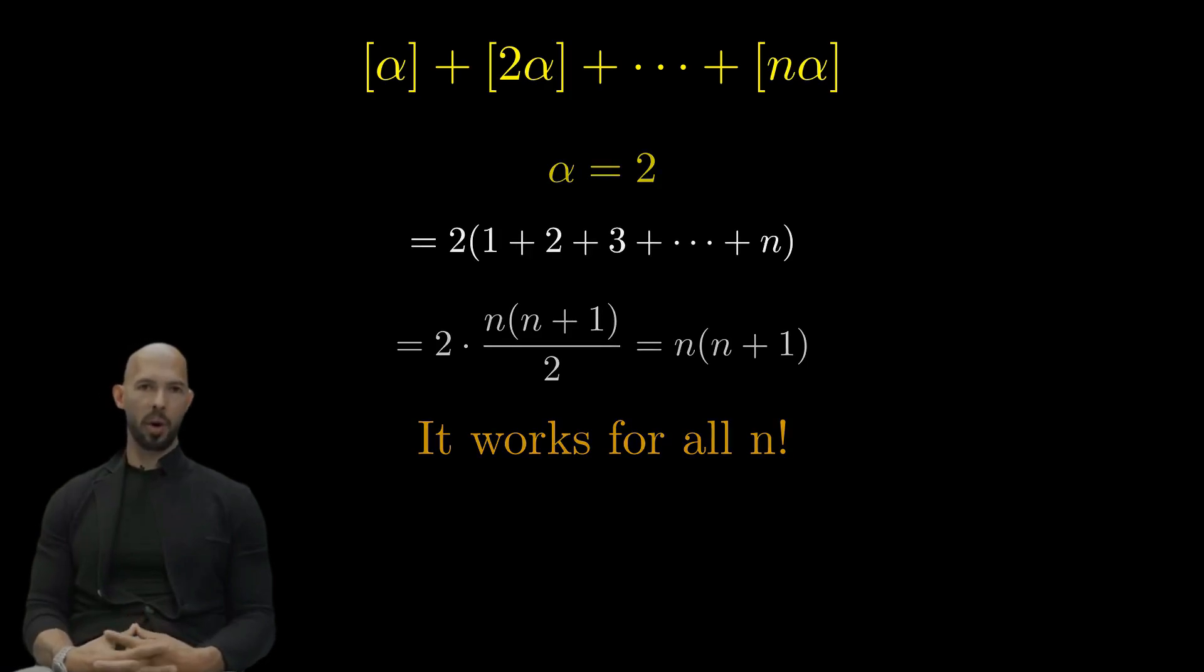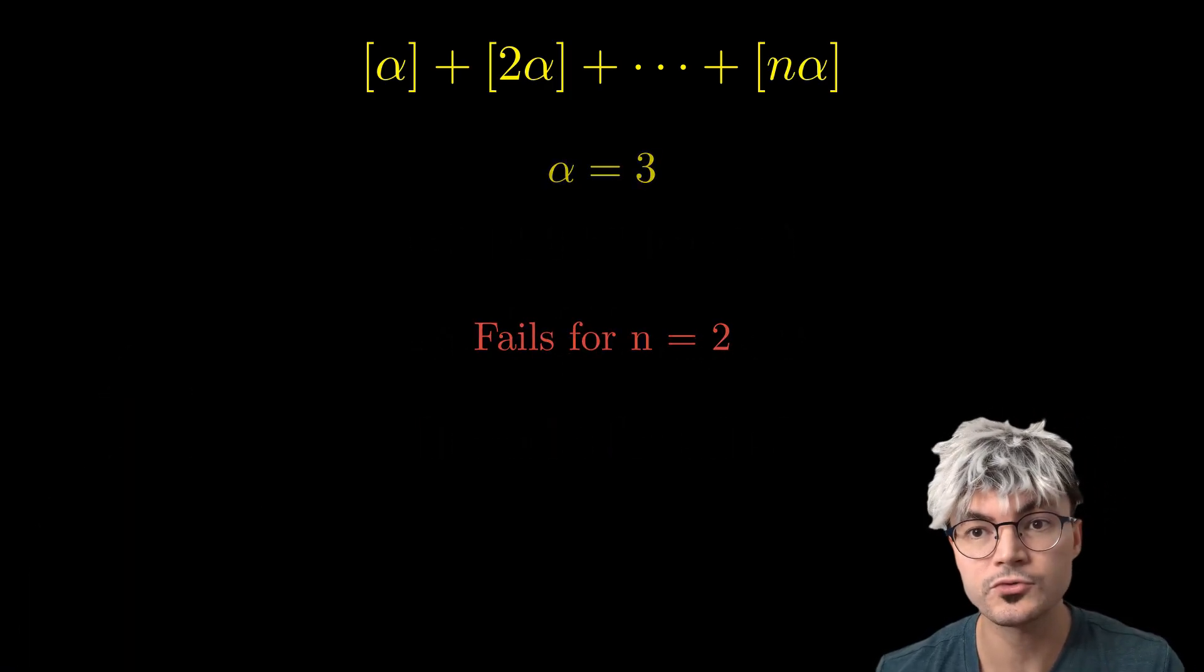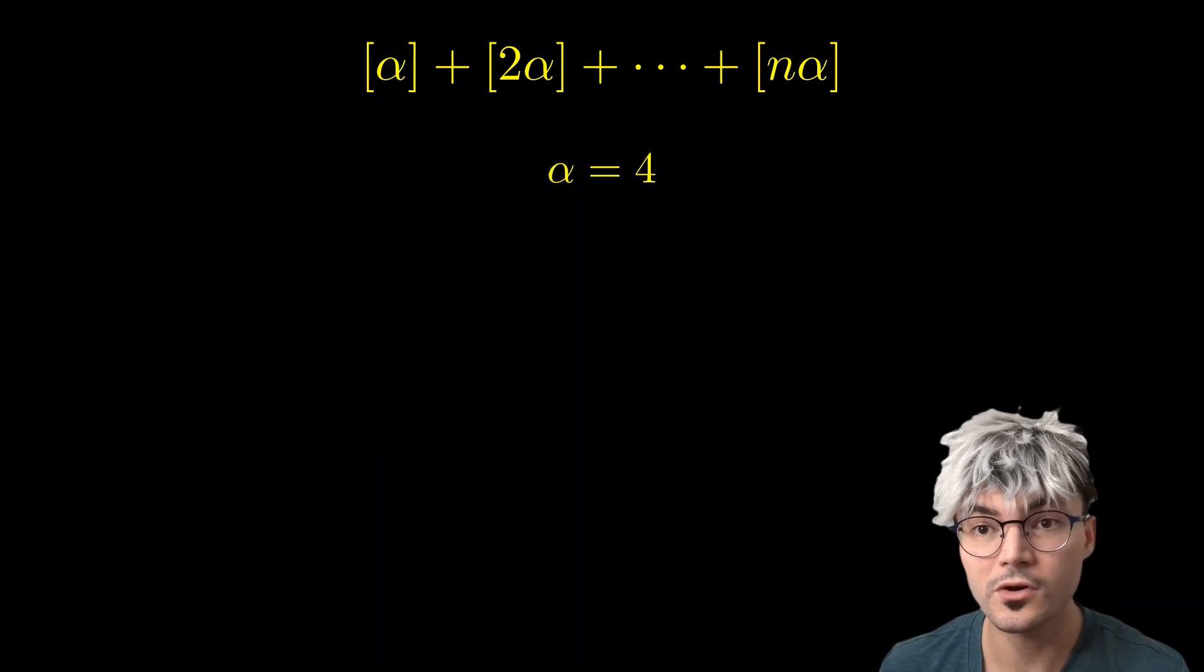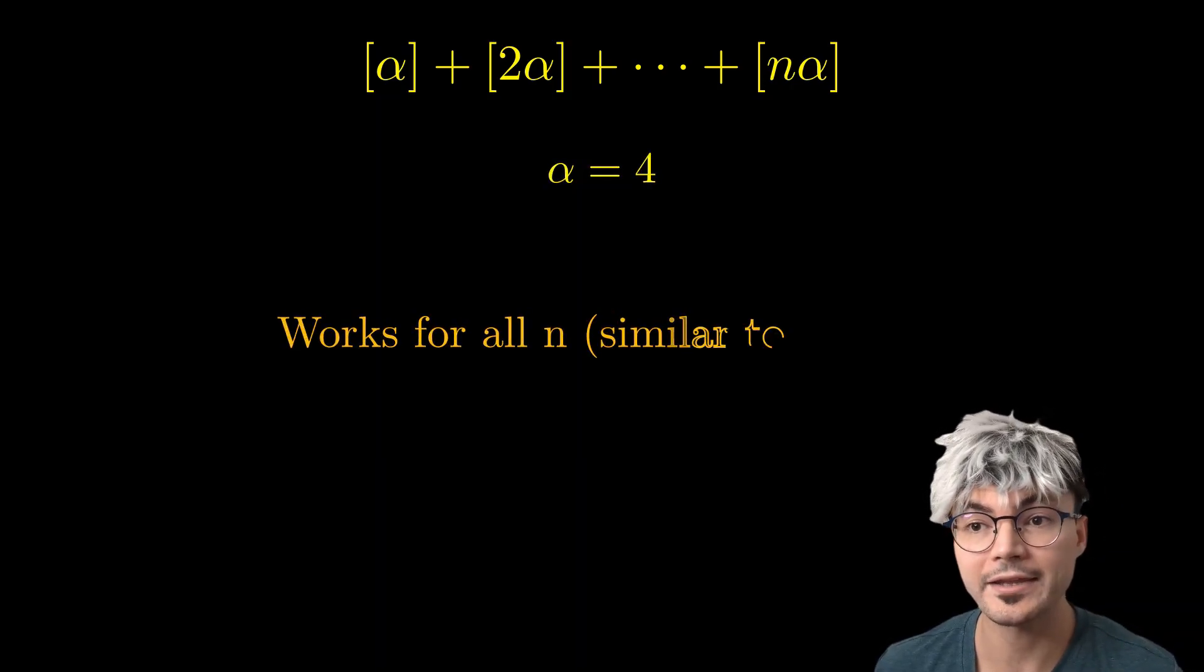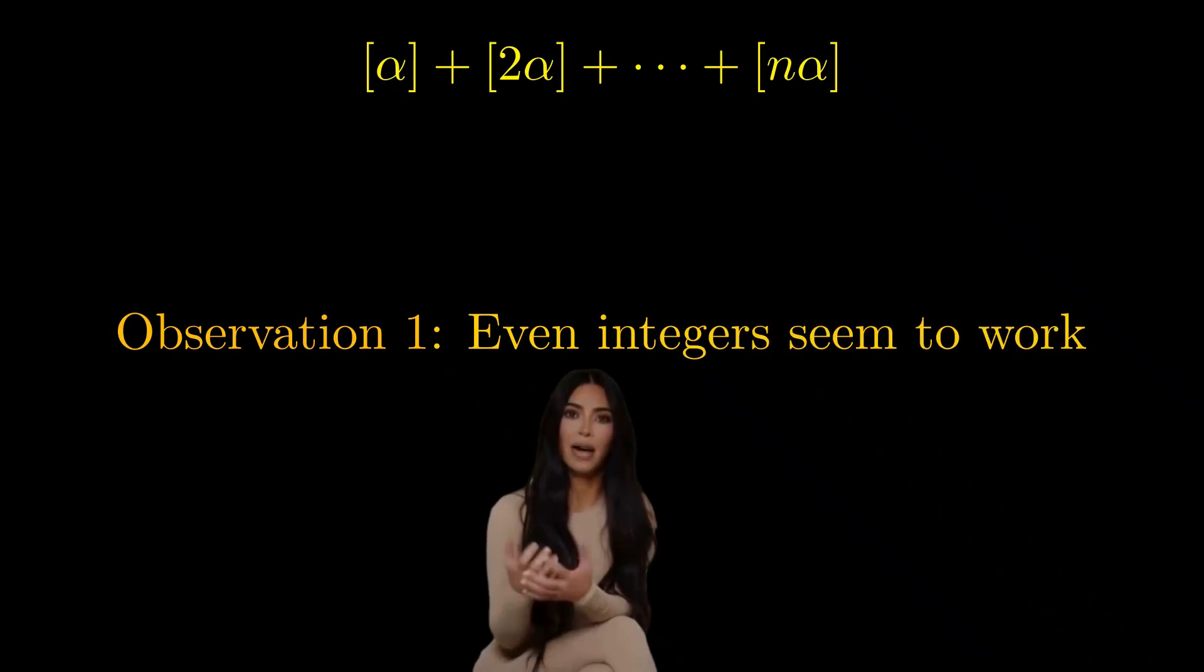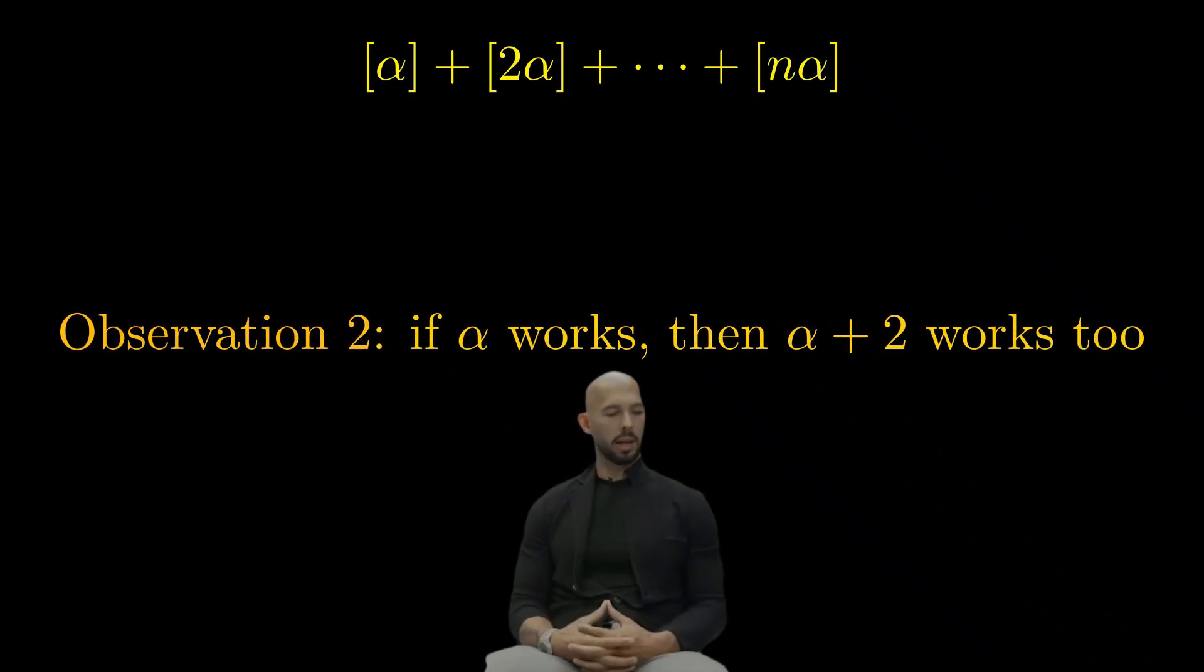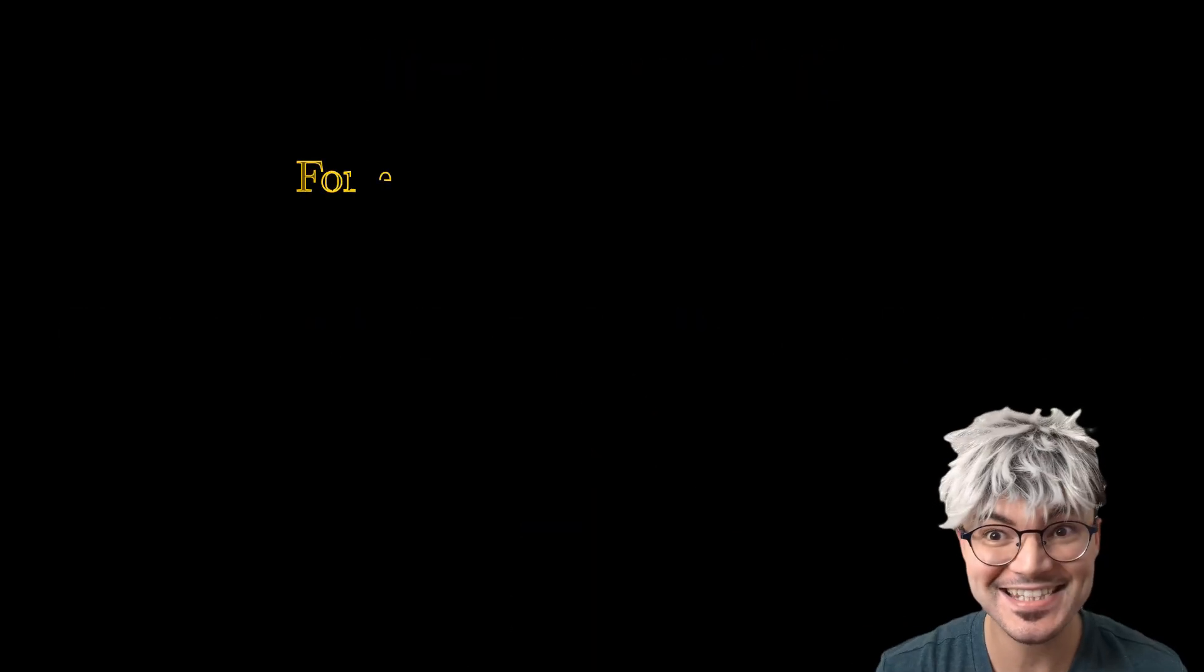Do you smell it, Aladdin? The solution is not far away. Trying alpha equals 3 fails for n equals 2. Trying alpha equals 4 works for all n, similar to alpha equals 2. I have a feeling that even numbers might work. Even numbers are my favorite numbers. As an alpha myself, my sharp intellect tells me that if alpha works, alpha plus 2 might too. Let's dig deeper.